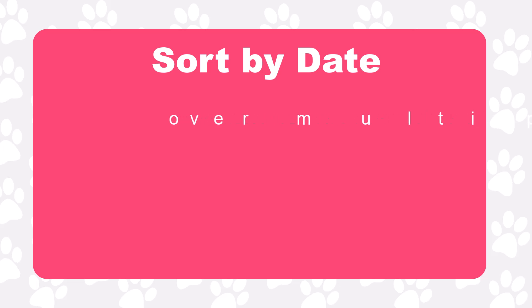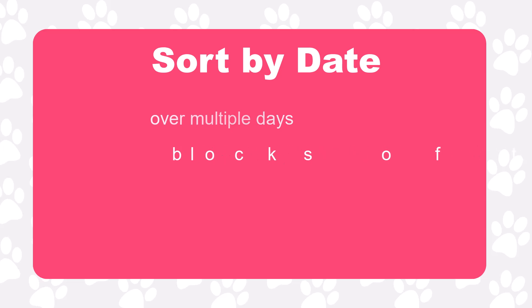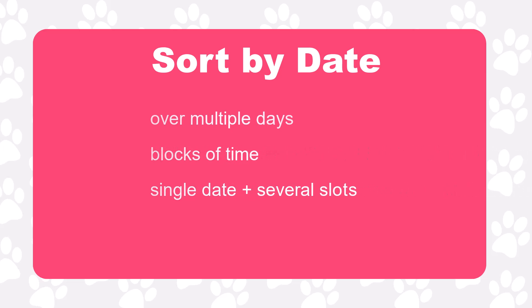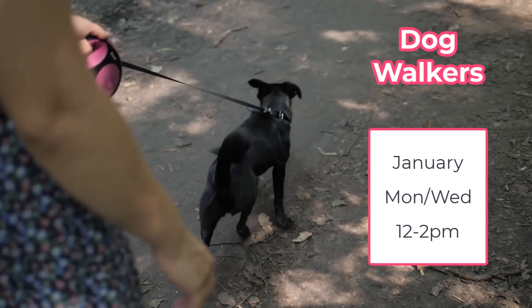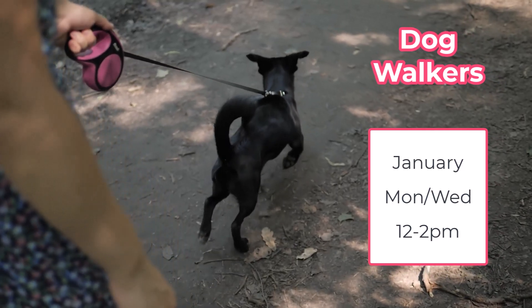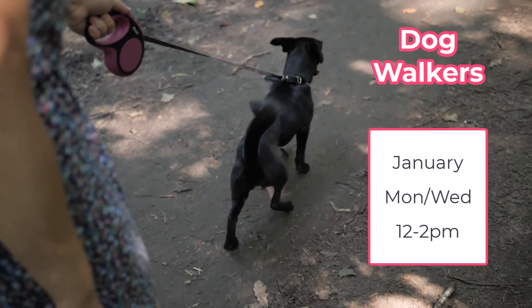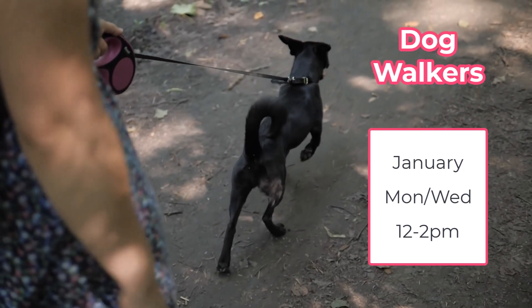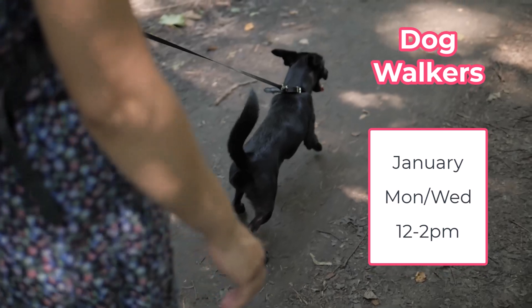The Sort By Date format has an easy-to-follow layout which is best for projects occurring over multiple days, require blocks of time, or occur on a single date and need several slots. Let's use this format to sign up dog walking volunteers for the month of January.